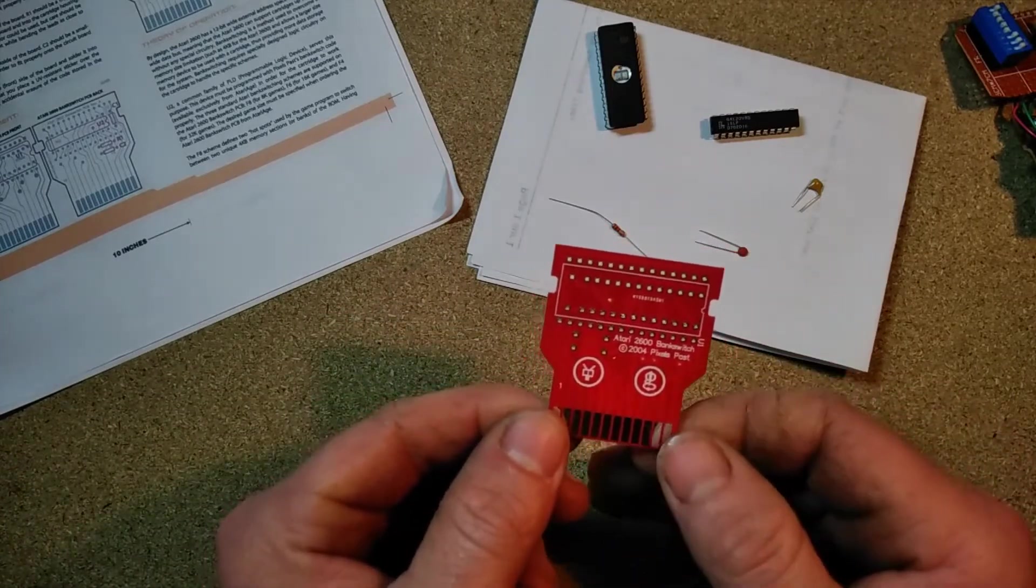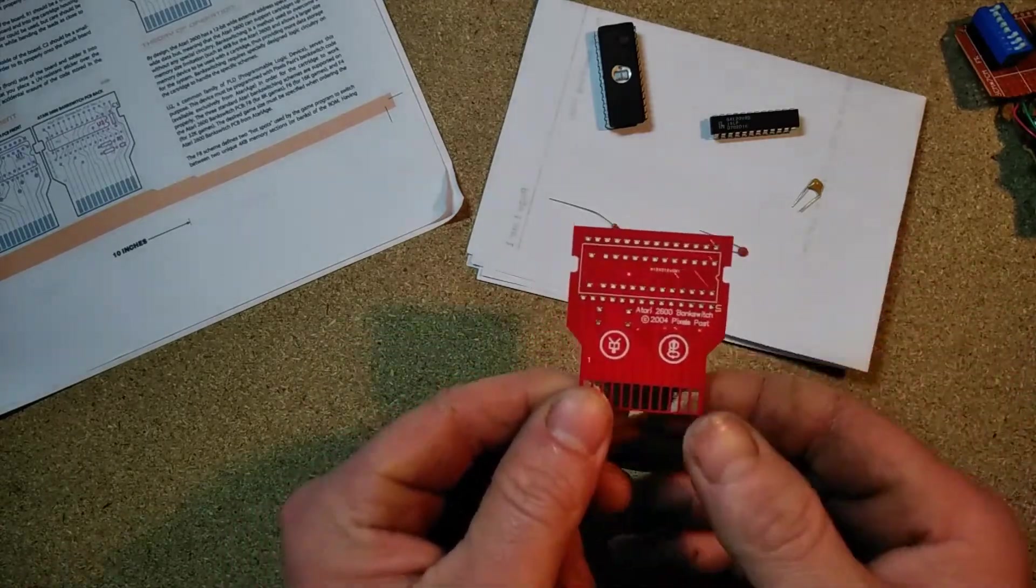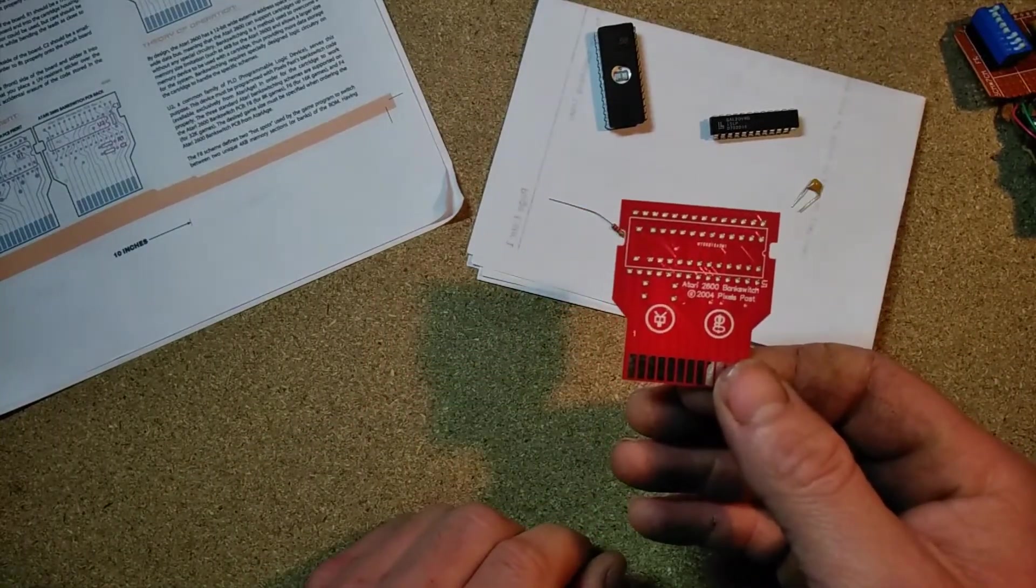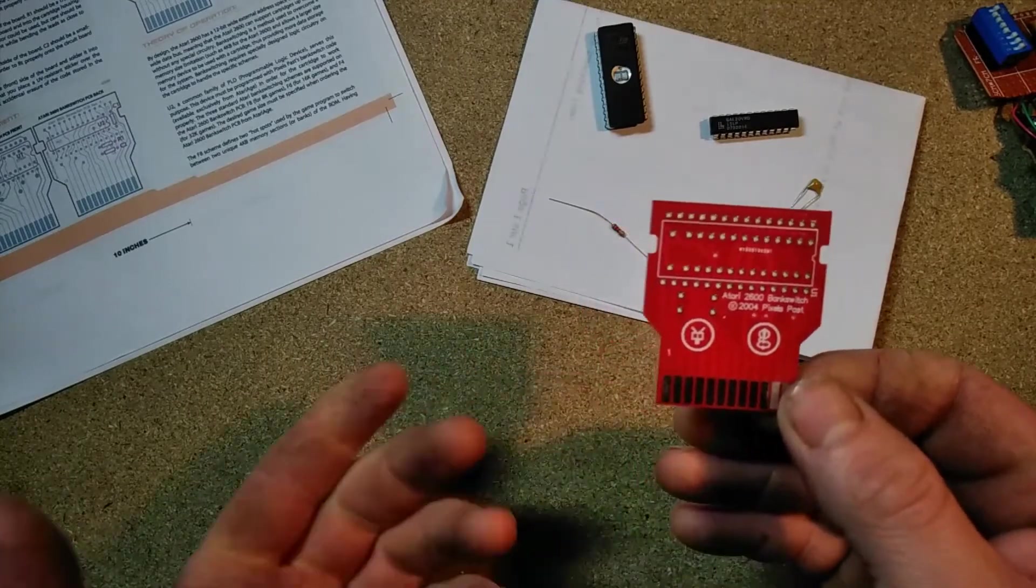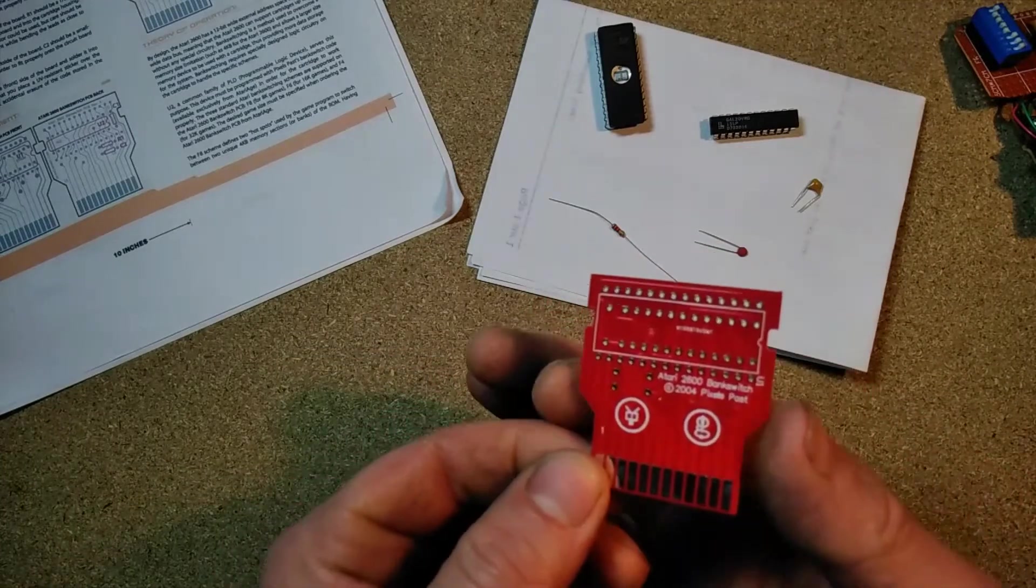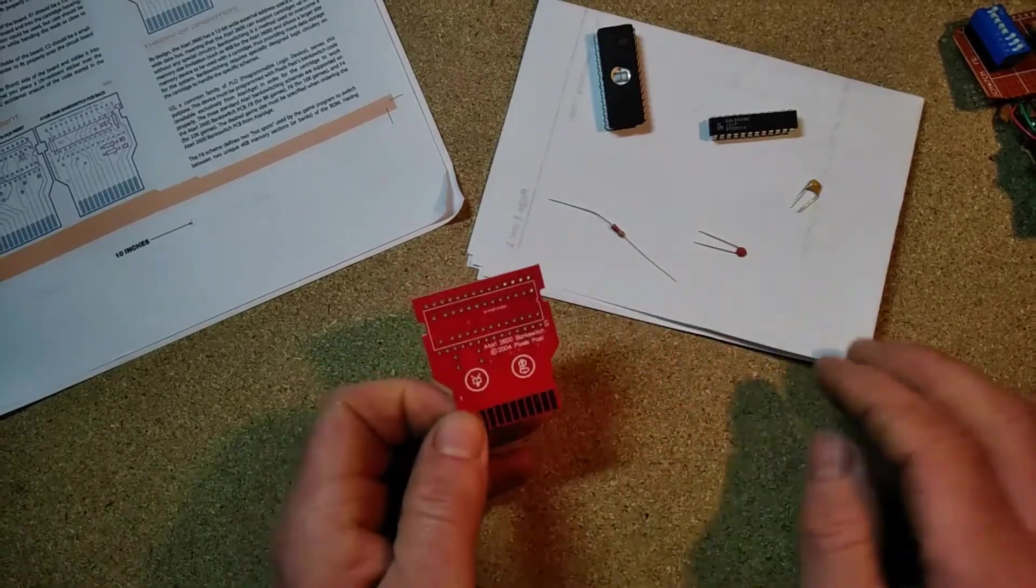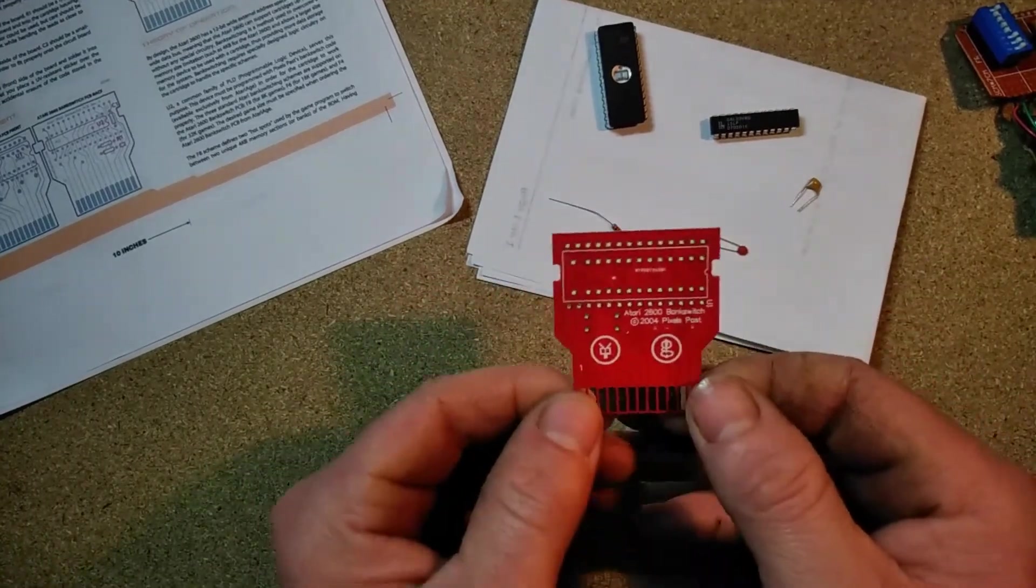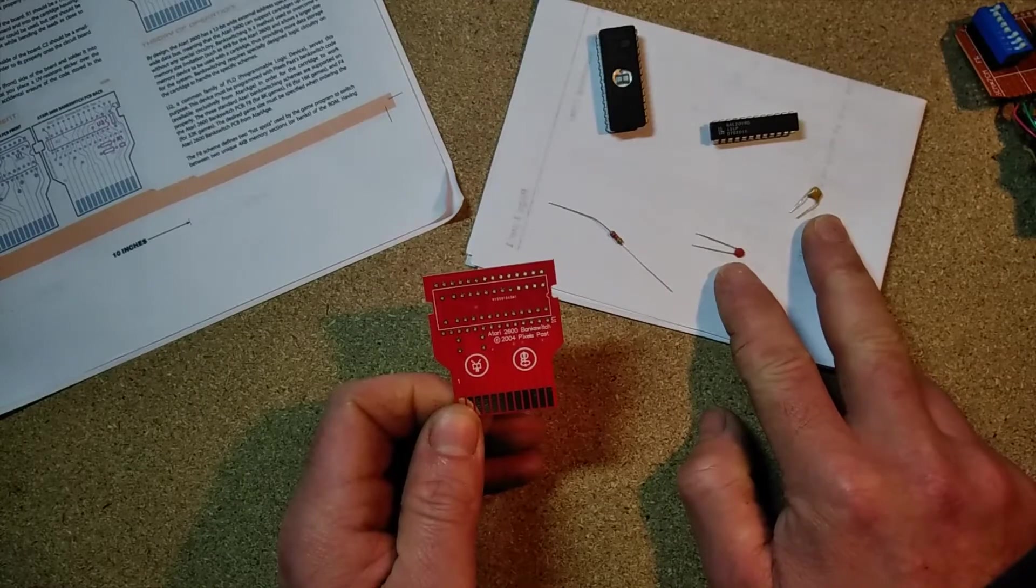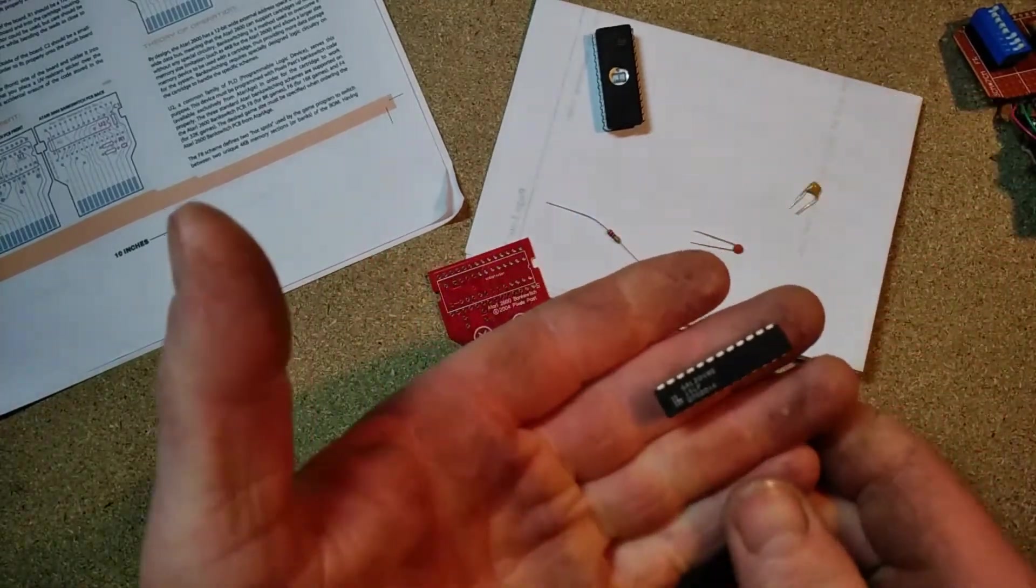They've got a few different bank switching and regular cartridge PCBs. You download these Gerbers and get them made by your favorite PCB manufacturer. When they arrive, all they need is a resistor, two capacitors, and this guy here is what they call a GAL chip - actually it's a PLD or programmable logic device.